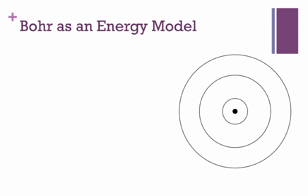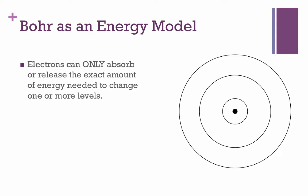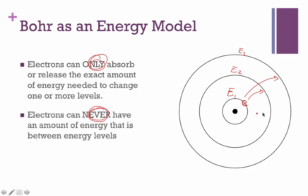Electrons can only absorb or release the exact amount of energy needed to change from one level to another. An electron can be on energy level one and jump up to energy level two or energy level three — those are the only allowed jumps. Electrons can never have amounts of energy between levels; an electron can't jump halfway between level one and level two. The Bohr model shows us there are limitations to the amount of energy an electron can have — it can have this quantity or that quantity, but nothing in between. This is the basis for quantum mechanics and the reason spectroscopy is able to do what it does.